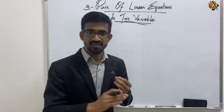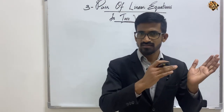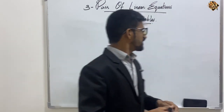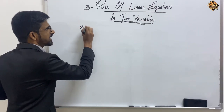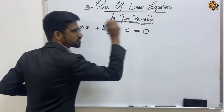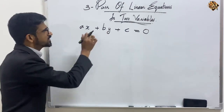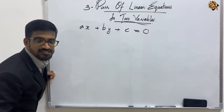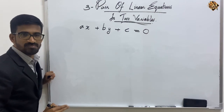Here we will learn two different methods — graphical and algebraic — to solve these equations. In the algebraic method we have the substitution method and the elimination method, which are very easy. We know how to represent a linear equation in two variables as ax + by + c = 0, which we already studied in grade 9. Here a, b, and c are real numbers.